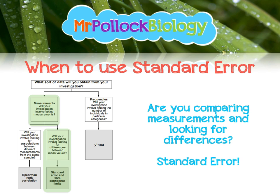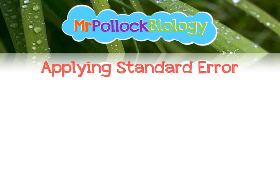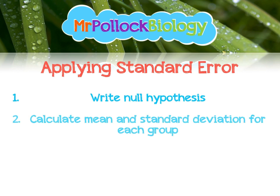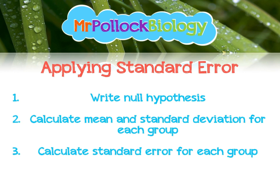So we know when to use it and what it is, but how do we actually apply it? There are a few stages. First, as ever, we write a null hypothesis. Secondly, we calculate the mean and then the standard deviation for each set of results. Thirdly, we calculate the standard error for each group, and finally we plot a graph of our data and interpret it.